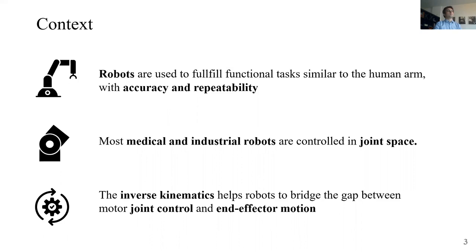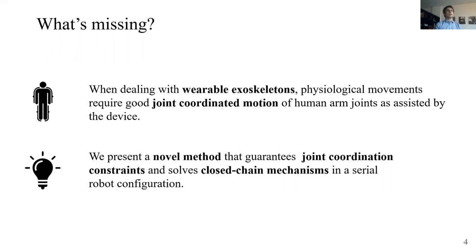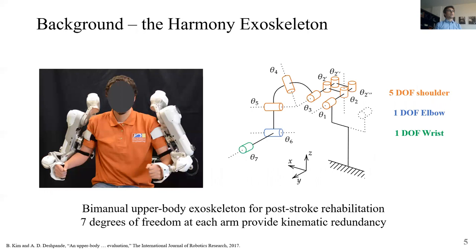So what's missing? In the case of wearable exoskeleton it is not important to precisely control the position of the end effector. It is more important to provide a good coordination among the joints of the human arm. This is why we present an inverse kinematics algorithm that exploits the redundancy of the robot to solve for conflicting multi-constraints. Some of these constraints can derive from the need of coordination among joints and some other can also derive from closed chain mechanisms that cannot be solved with traditional serial robot methods.